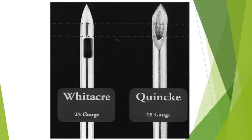As you can see in this picture, the Whitacre needle — the prototype for blunt tip needles — looks like a pencil tip, and the aperture is on the side of the shaft. There are no sharp edges that would cut the fibers of the dura. The aperture or orifice is 2.5 mm proximal to the tip, and it is a small opening, making aspiration of CSF or injection of the drug more difficult.